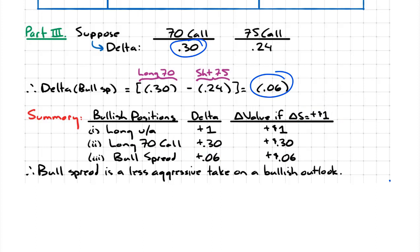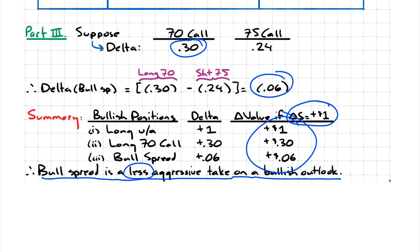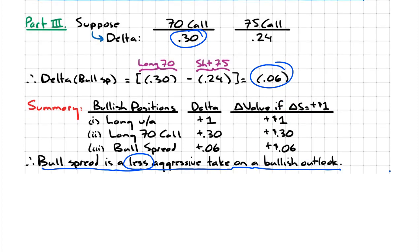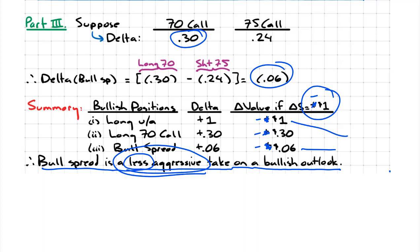Clearly a bull spread is a less aggressive bullish outlook. If you were really bullish about the stock, you'd just buy the stock for maximum upside. But if you're a little unsure, because if the price of the underlying asset drops, buying the stock would lose more, whereas the bull spread would lose less. That's why the bull spread is referred to as a less aggressive bullish outlook.